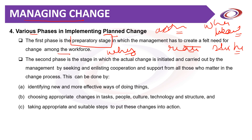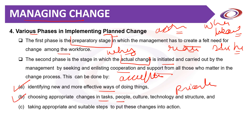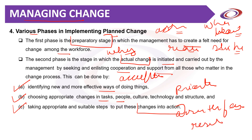The second phase is when the actual change is initiated — the plan is implemented by seeking and enlisting cooperation and support from all those who matter. This is done by identifying new and more effective ways of doing things in a manner acceptable to employees, choosing appropriate changes in tasks and people, prioritizing, and taking suitable steps to put the change into action. Before executing the plan, management must assess the forces that will affect the change program — which factors will favor the change initiatives and who will resist them.